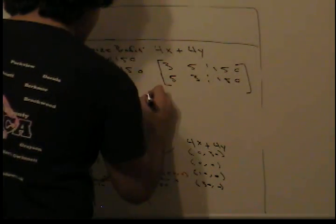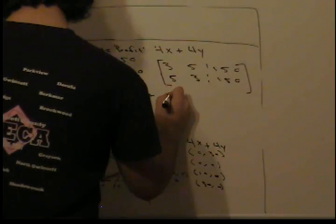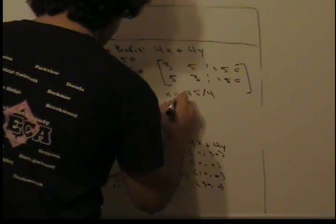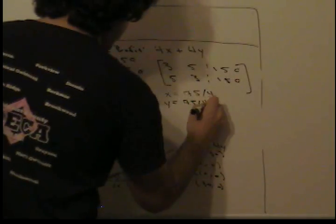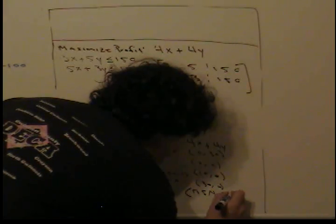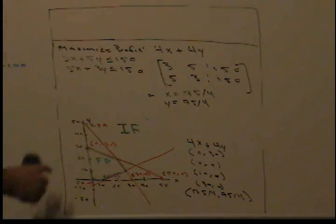When we row reduce this matrix, we get that x equals 75 over 4 and y equals 75 over 4, which is approximately 18 for each of them. So we've found what this corner point is: (75/4, 75/4). You can also find this by solving the simultaneous equations — getting x by itself and plugging back in — but putting it in a matrix is much more efficient.